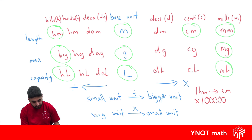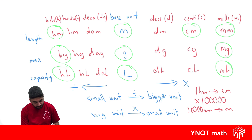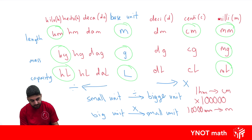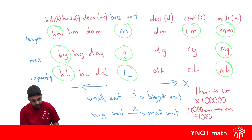Let's look at one more example. Let's change 10,000 millimetres into metres. Here I'm going from a smaller unit to a bigger unit, which means I need to be dividing. How many jumps am I going to make? One, two, three — so I need to divide by a one with three zeros, which is 1,000. If I do that, I get 10 metres.